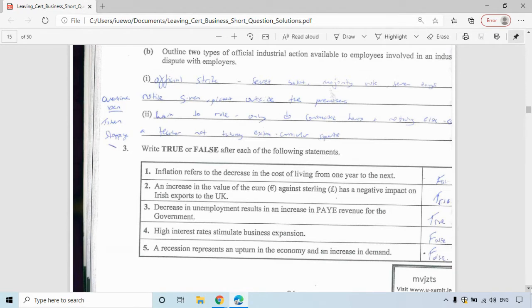High interest rates stimulate business expansion—that's false because there's less incentive for businesses to borrow money since they have to pay more interest. A recession represents an upturn in the economy and an increase in demand—that's false. It means you're producing less goods and services for two consecutive quarters, so fewer people are working and there's less demand in the economy.